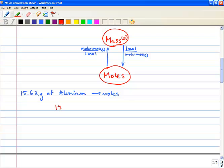So we have 15.62 grams of aluminum, and we follow our arrow along there, and we're going to put grams on the bottom and one mole on top. The only number that ever goes with mole is one. And one mole of aluminum is 27 grams.